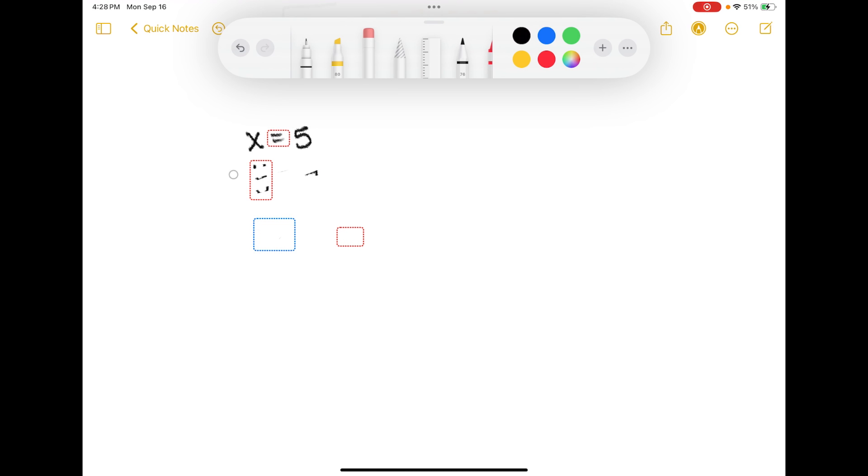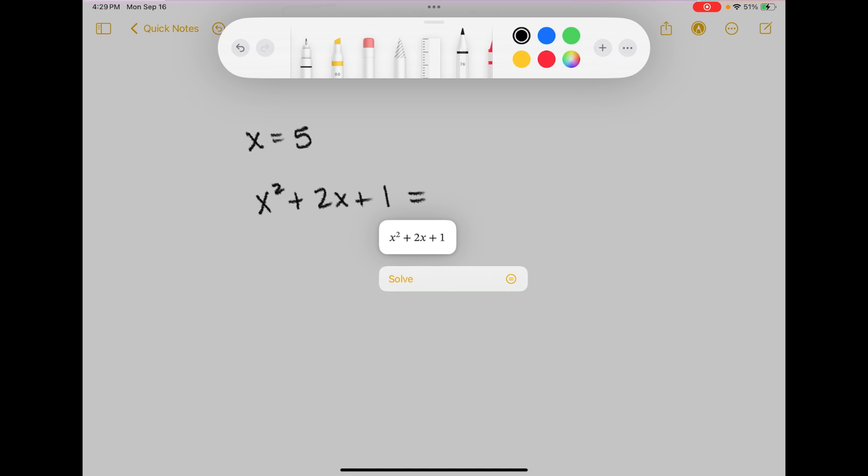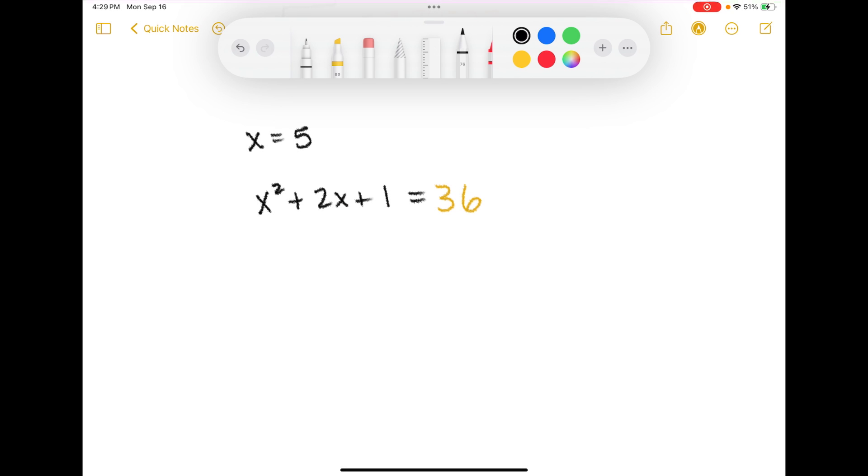Let me erase this and try something different. Let's do x squared plus 2x plus 1. So it knows to substitute a 5 in for x in this problem. When you get too many variables it can be a little glitchy.